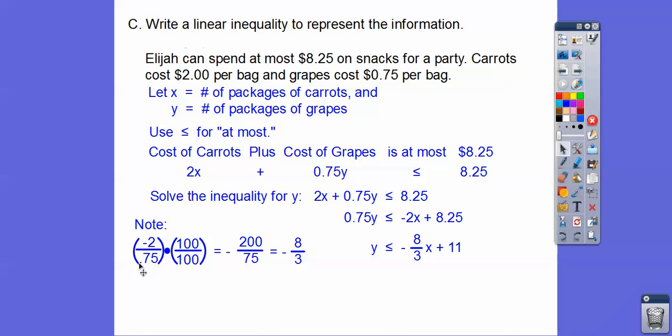You can't have a decimal in a fraction right there. So what I did is I multiplied it by 1. But my 1 was 100/100. That way it moved the decimal over two places. So it became 75.